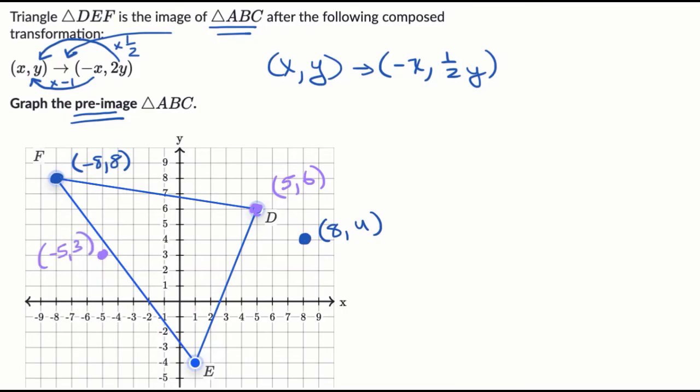And then last but not least, this point right over here E is at positive one comma negative four. So you take the negative of that one, you get to negative one, and then you take half of that negative four, you get to negative two, you get right over here. So you go to negative one and then negative two.